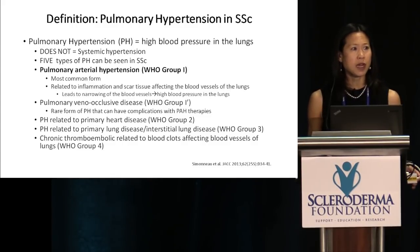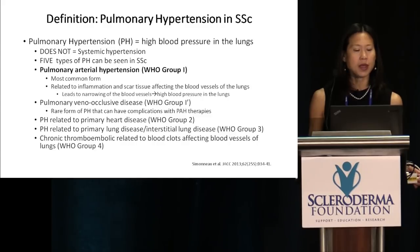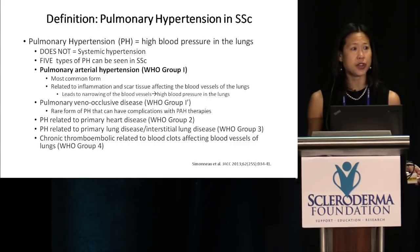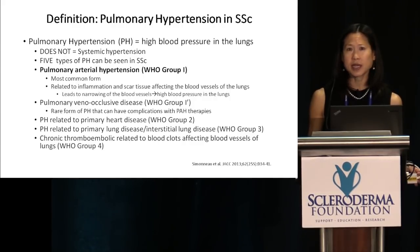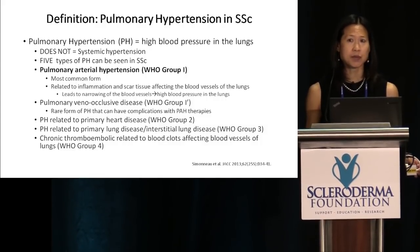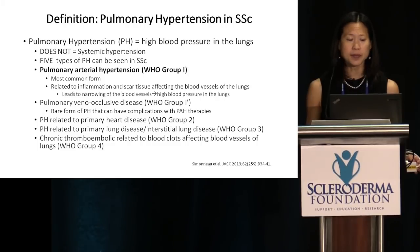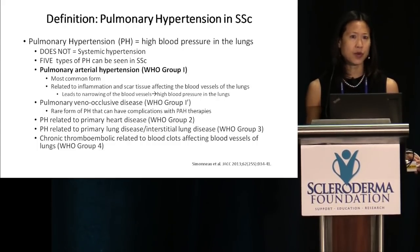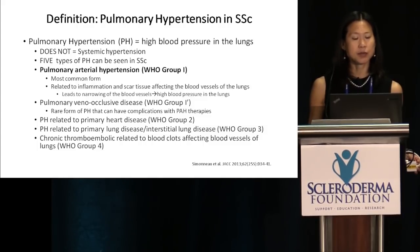There's another rare form called pulmonary veno-occlusive disease, or PVOD, WHO Group 1 prime. This can occur in scleroderma patients and is important because they can experience complications with typical PAH therapies. Pulmonary hypertension can also be related to primary heart disease — WHO Group 2 — or to primary lung disease, particularly interstitial lung disease in scleroderma — WHO Group 3. A less common form is chronic thromboembolic disease, related to blood clots affecting the lung blood vessels.